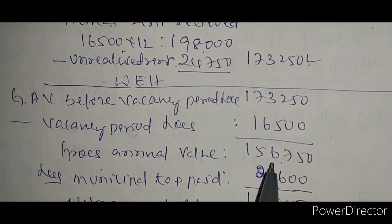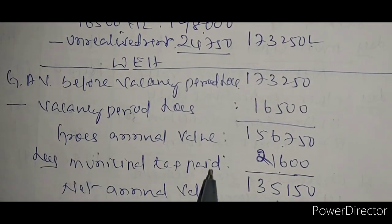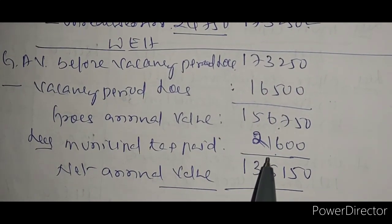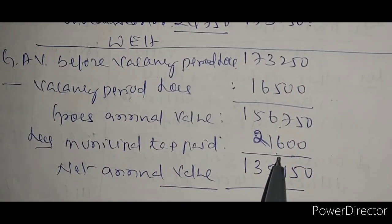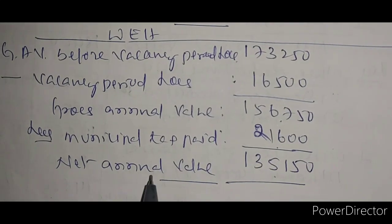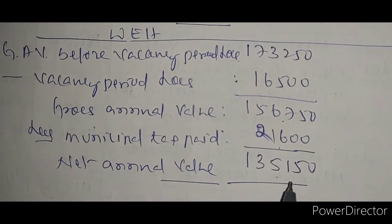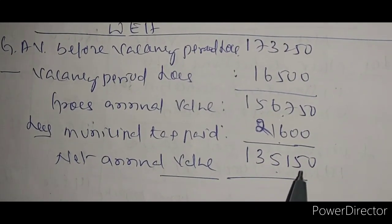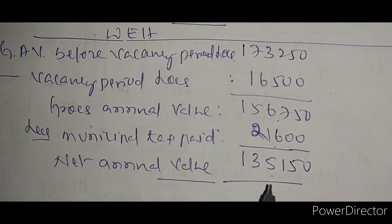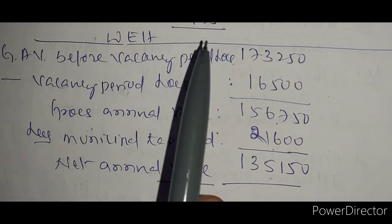Municipal tax paid by the owner is twenty one thousand six hundred. Deducting that, the net annual value is one lakh thirty five thousand one hundred and fifty. This carries five marks.